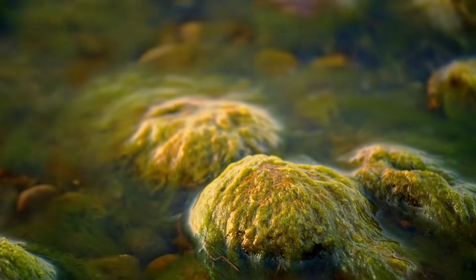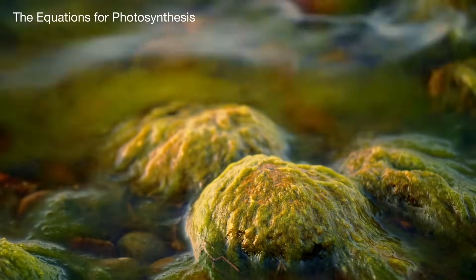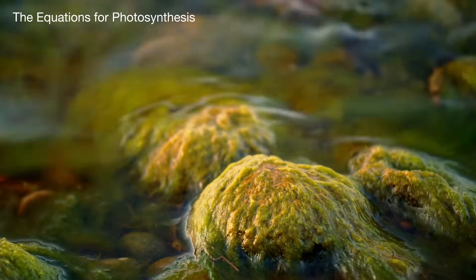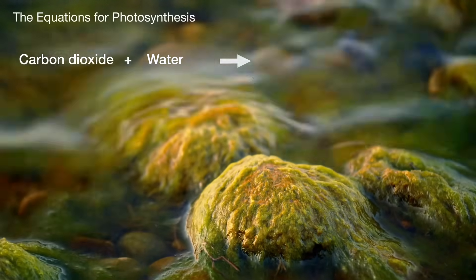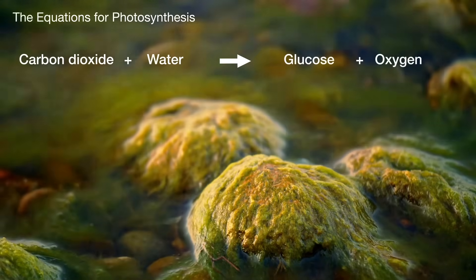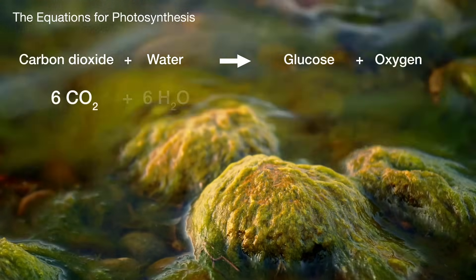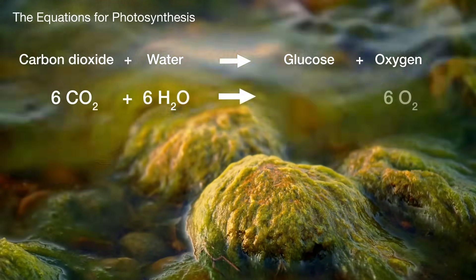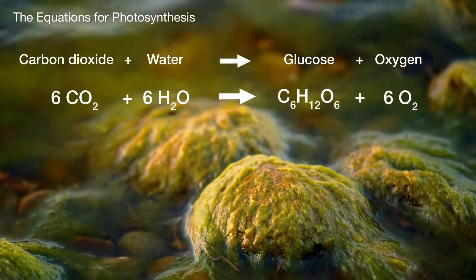This is a good opportunity for the examiner to ask you about photosynthesis, and you should know both the symbol and the word equation for this reaction. That's carbon dioxide plus water turning into glucose and oxygen. As a formula: 6CO₂ + 6H₂O → 6O₂ + C₆H₁₂O₆.